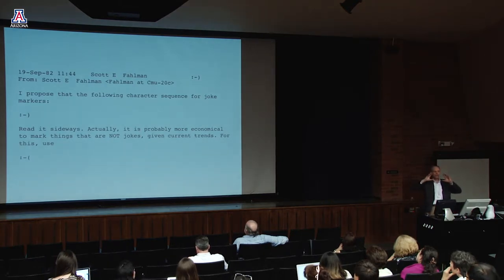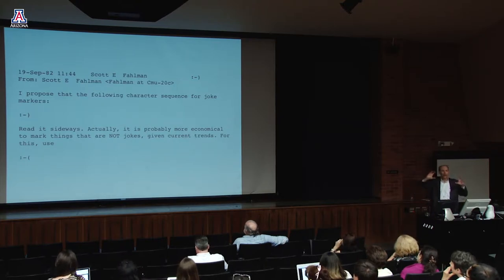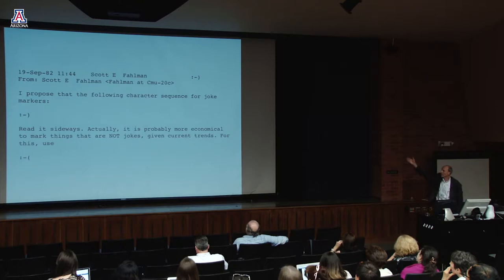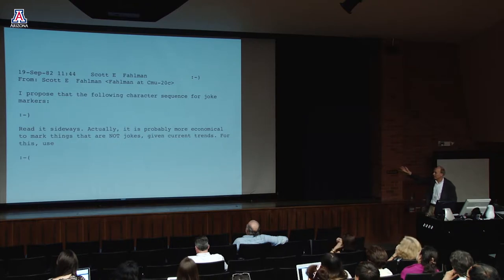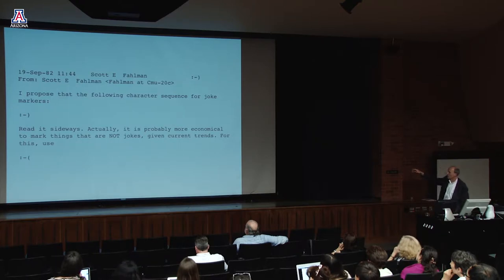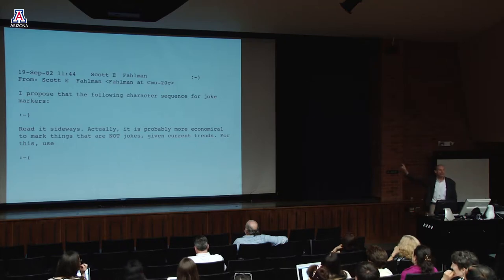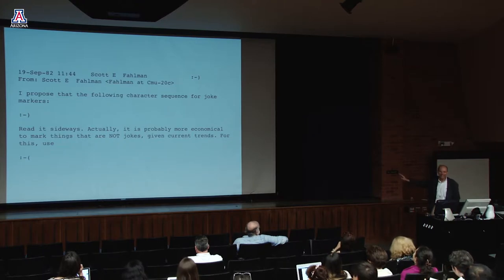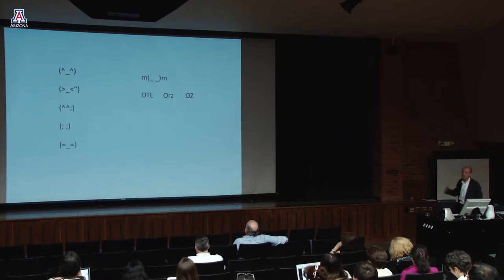Now instead of one sign, let's look at how a whole system of signs can develop — emoticons. Scott Fahlman, back in 1982, invented the smiley in an email: 'I proposed the following character sequence for joke markers: :-). Read it sideways.' He also proposed a 'not joke' marker with a frown, but that didn't catch on. The smiley caught on big time, and it's been appropriated in different cultures in different ways.